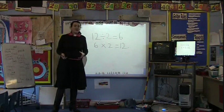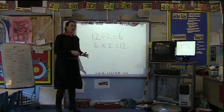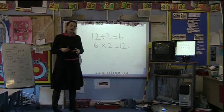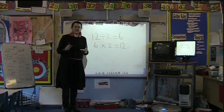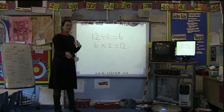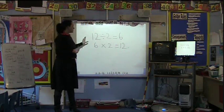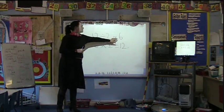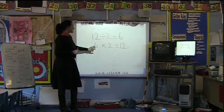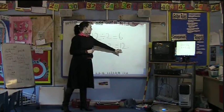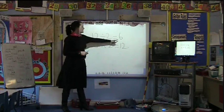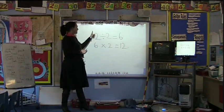When the children are confident with the steps we've just shown, we like to teach them the terminology inverse. This simply means to go back and do the opposite. So the inverse sum to 12 divided by 2 equals 6 would be 6 times 2 equals 12.